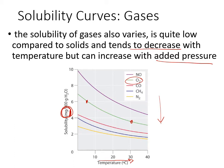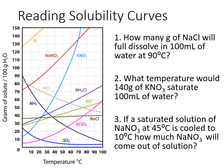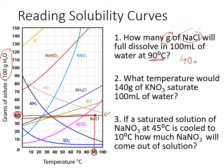Let's read some solubility curves. First question: how many grams of sodium chloride will fully dissolve in 100 mL of water at 90°C? We find the curve for sodium chloride, go up to 90°C on the x-axis, follow it up to the curve, then read across to the y-axis. At 90°C, 100 milliliters of water can hold about 40 grams of sodium chloride. By comparison, ammonium chloride would give a higher amount, and potassium chlorate would give a lower amount at the same temperature.